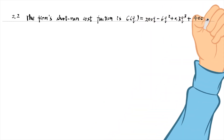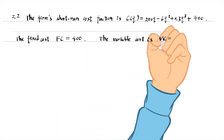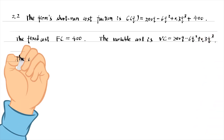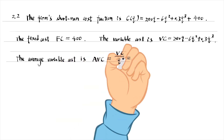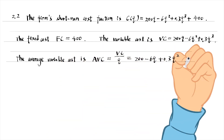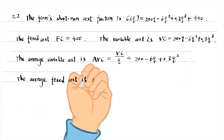A fixed cost is a cost that does not vary with the level of output — it is not a function of Q. A variable cost is the production expense that changes with the quantity of output produced — it is a function of Q. The average variable cost is the variable cost divided by the units of output produced. The average fixed cost is the fixed cost divided by the units of output produced.